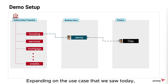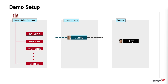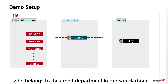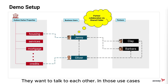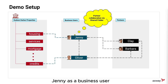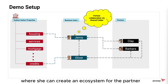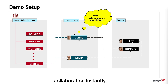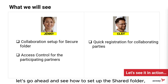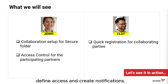Expanding on the use case we saw today, let's assume that other users like Barbara, who is Clay's partner, or Oliver, who belongs to the credit department in Hudson Harbor Properties, want to communicate with each other. In those use cases, Jani as a business user can leverage the shared folder option, where she can create an ecosystem for partner collaboration instantly. Let's go ahead and see how to set up the shared folder, define access, and create notifications.